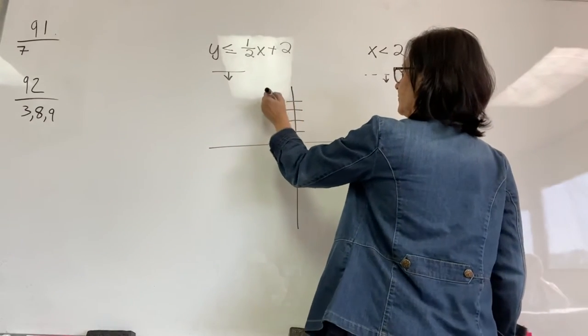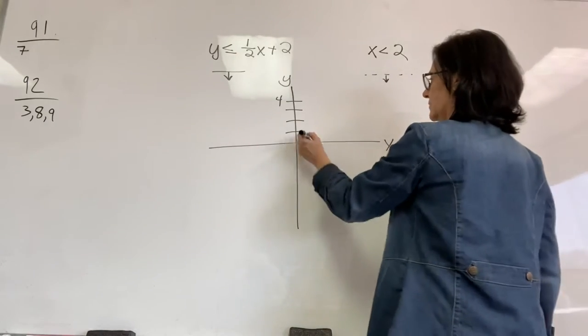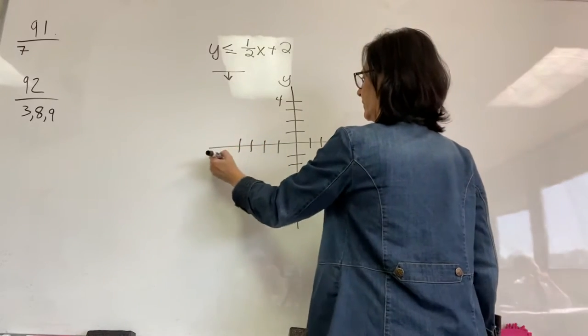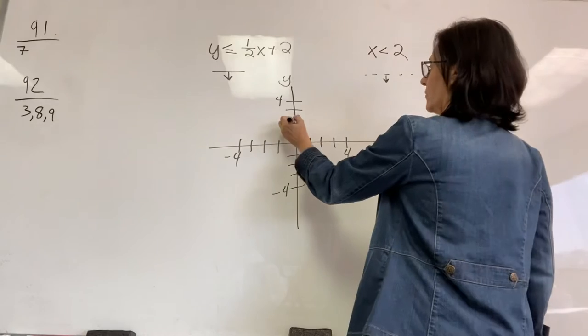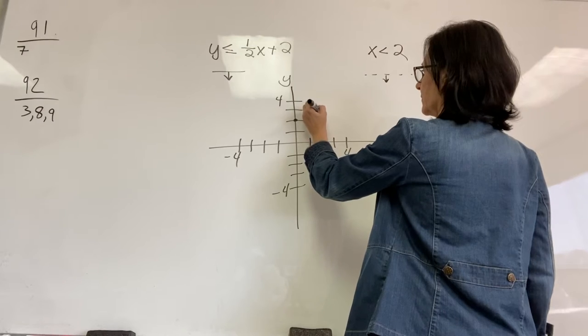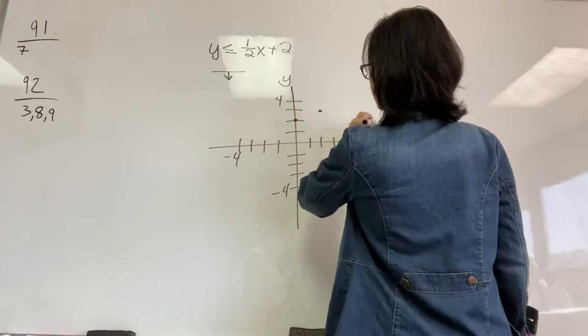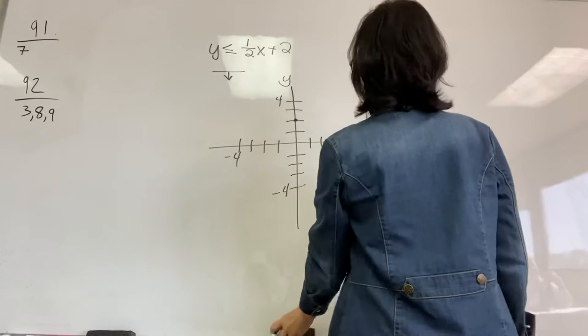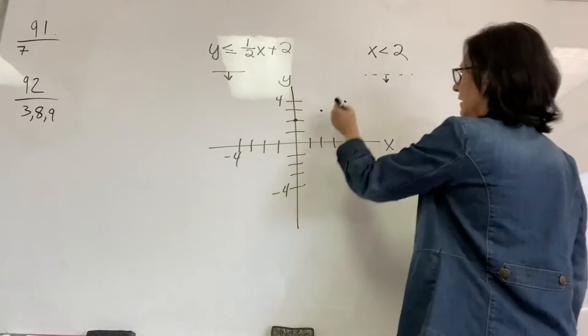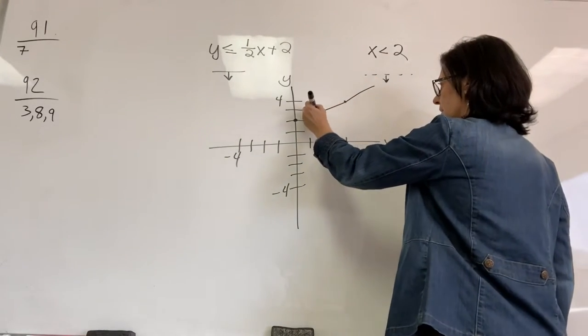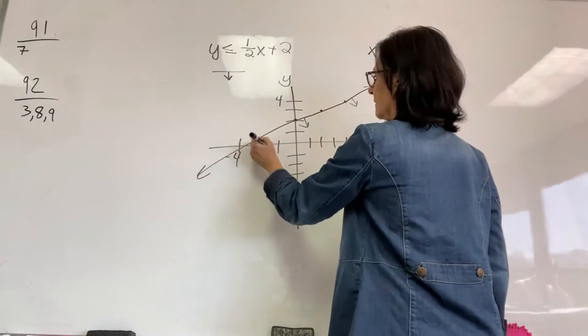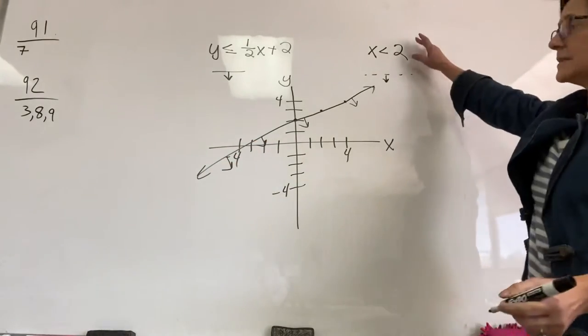1, 2, 3, 4. My Y axis, my X. All right, so we'll start with our Y intercept. We'll go up 1 over 2. Up 1 over 2. I didn't go very far over. It's not going to be a nice line. Up 1 over 2. It's going to be a solid line. And it's everything below it.